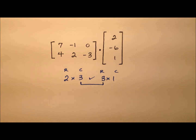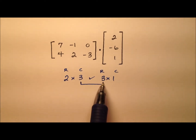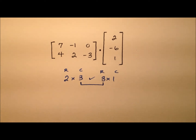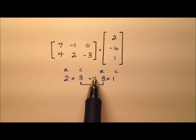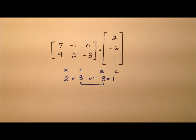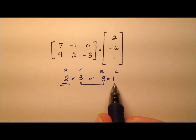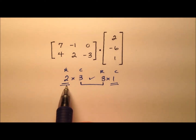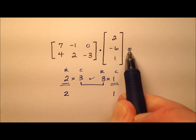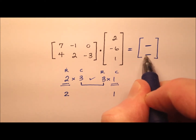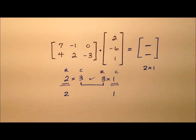We say that this multiplication is defined. In examples where the columns of the first and the rows of the second are not the same values, we say the multiplication is undefined — you will not be able to do it. The reason these numbers have to be the same is because of the way we put these together during the multiplication process. As for the dimensions of the product matrix, that's going to be the rows from the first and the columns from the second — so what you'll have here is a two by one matrix, with an entry for each of the two rows.